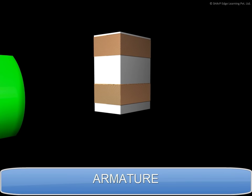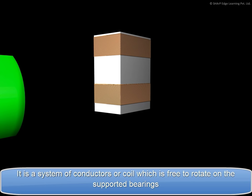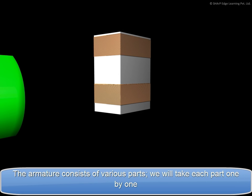Armature. It is a system of conductors or coil which is free to rotate on the supported bearings. The armature consists of various parts. We will take each part one by one.